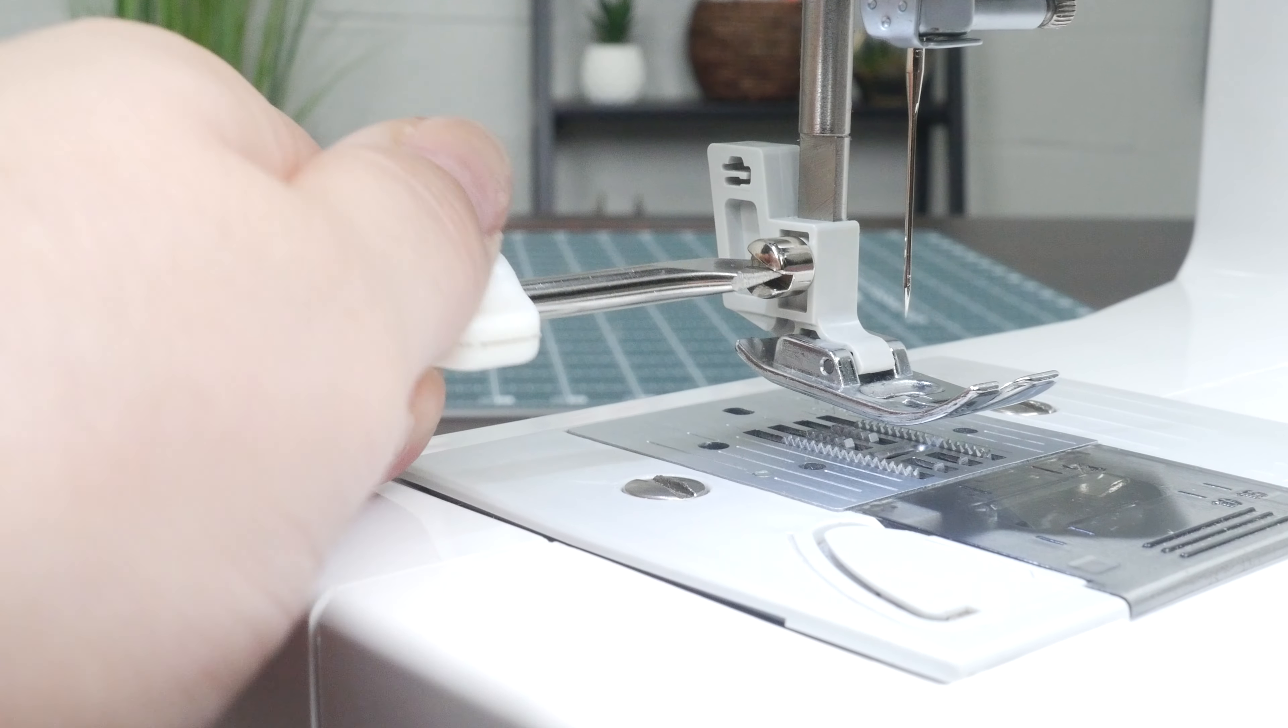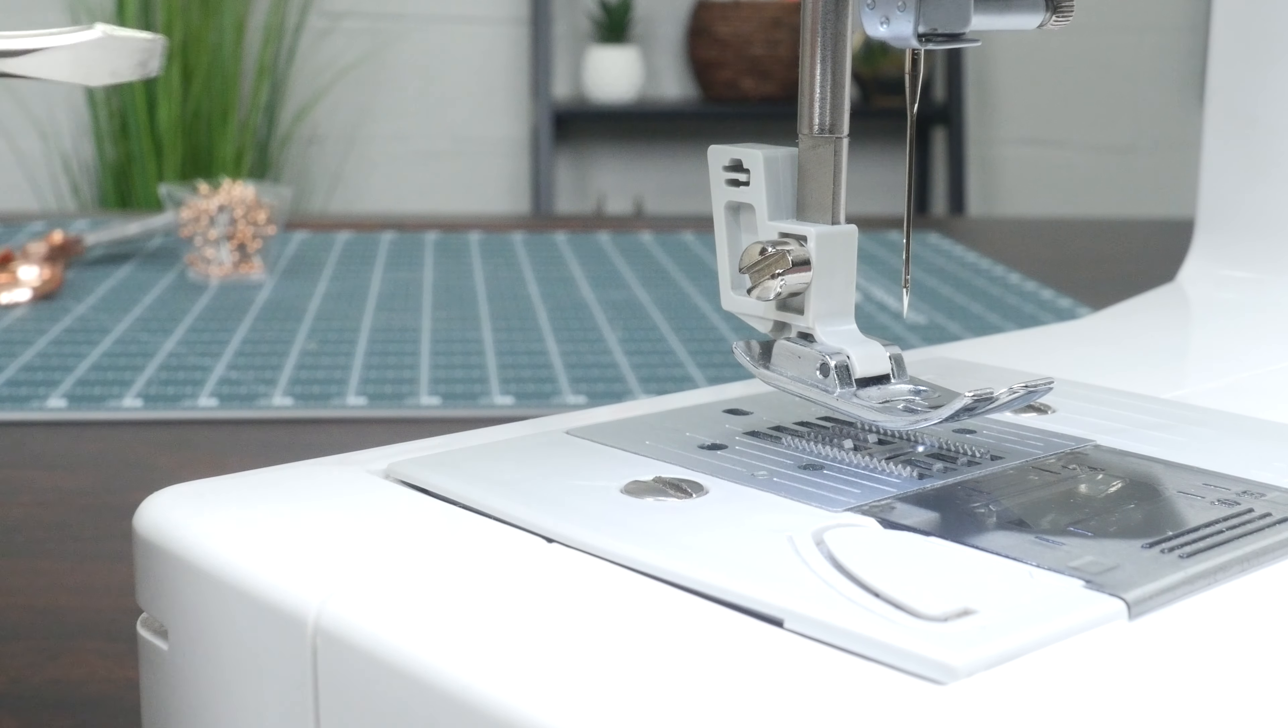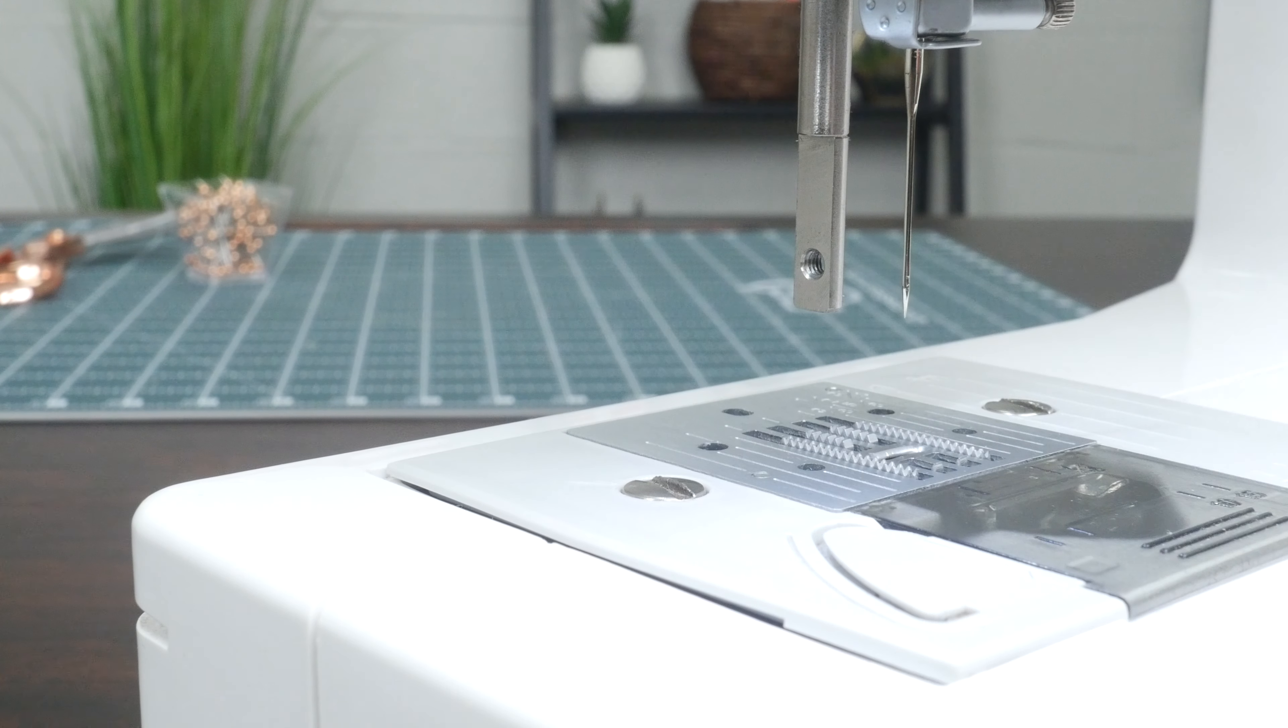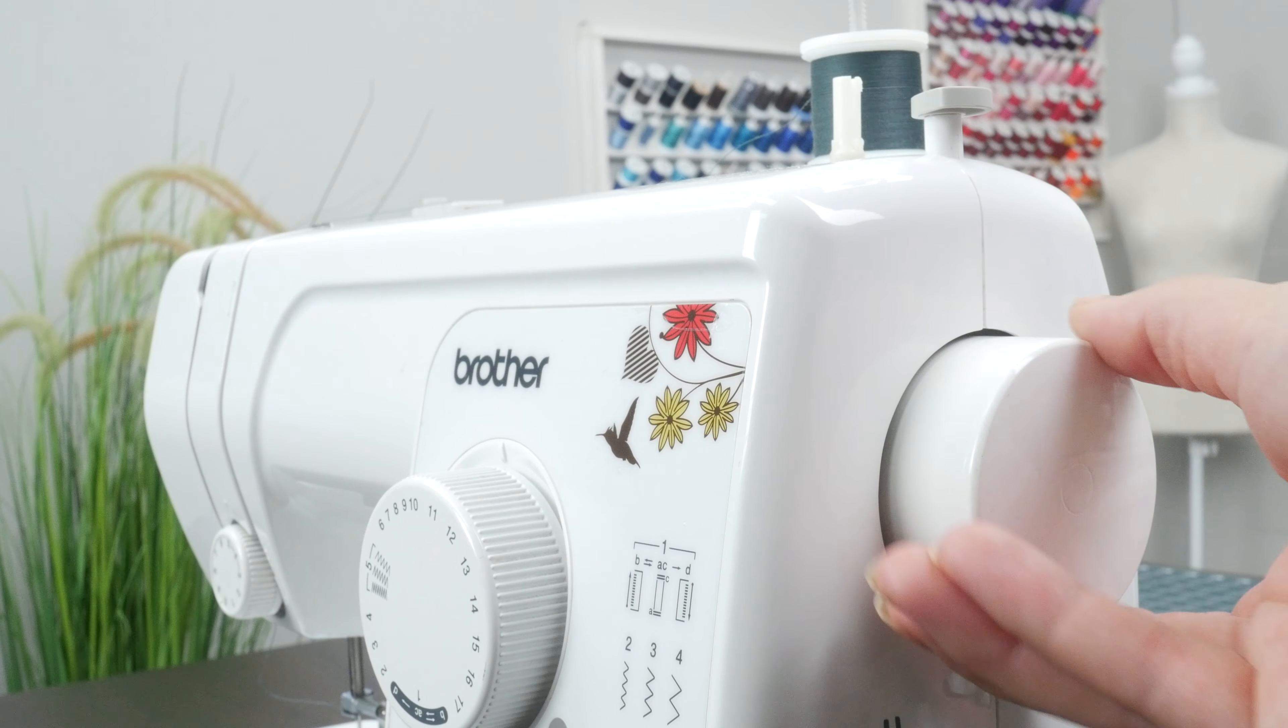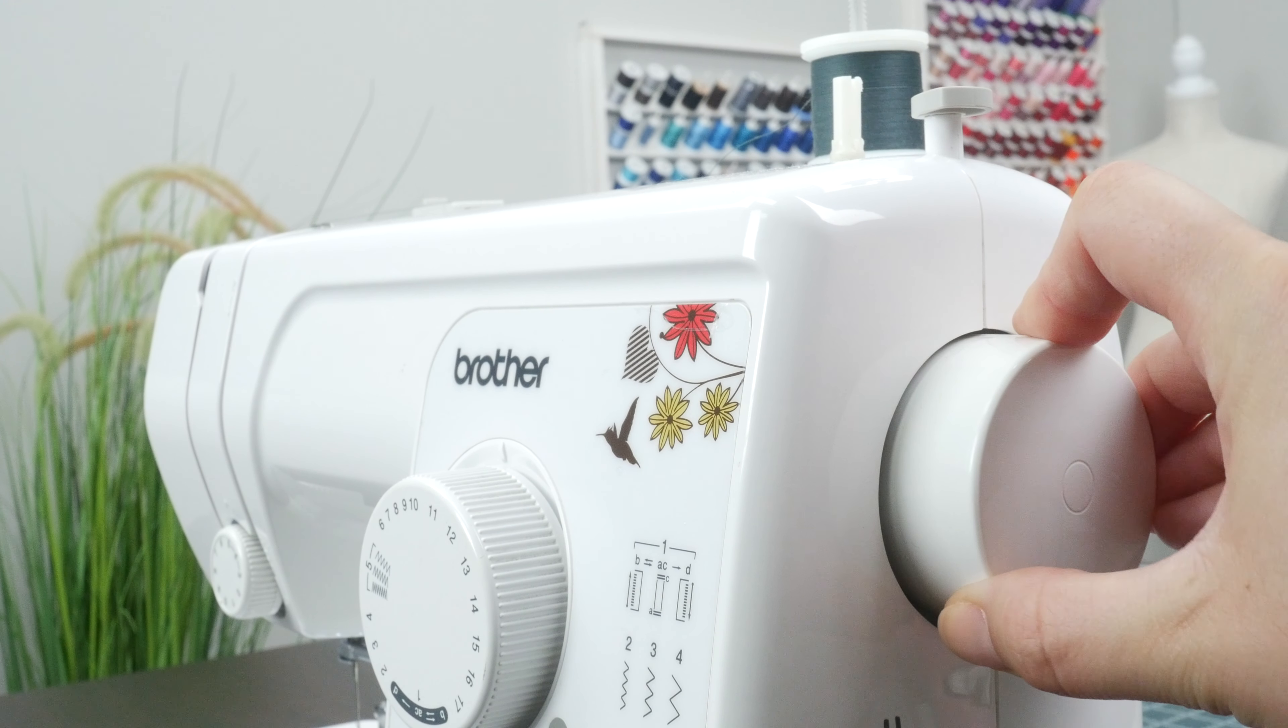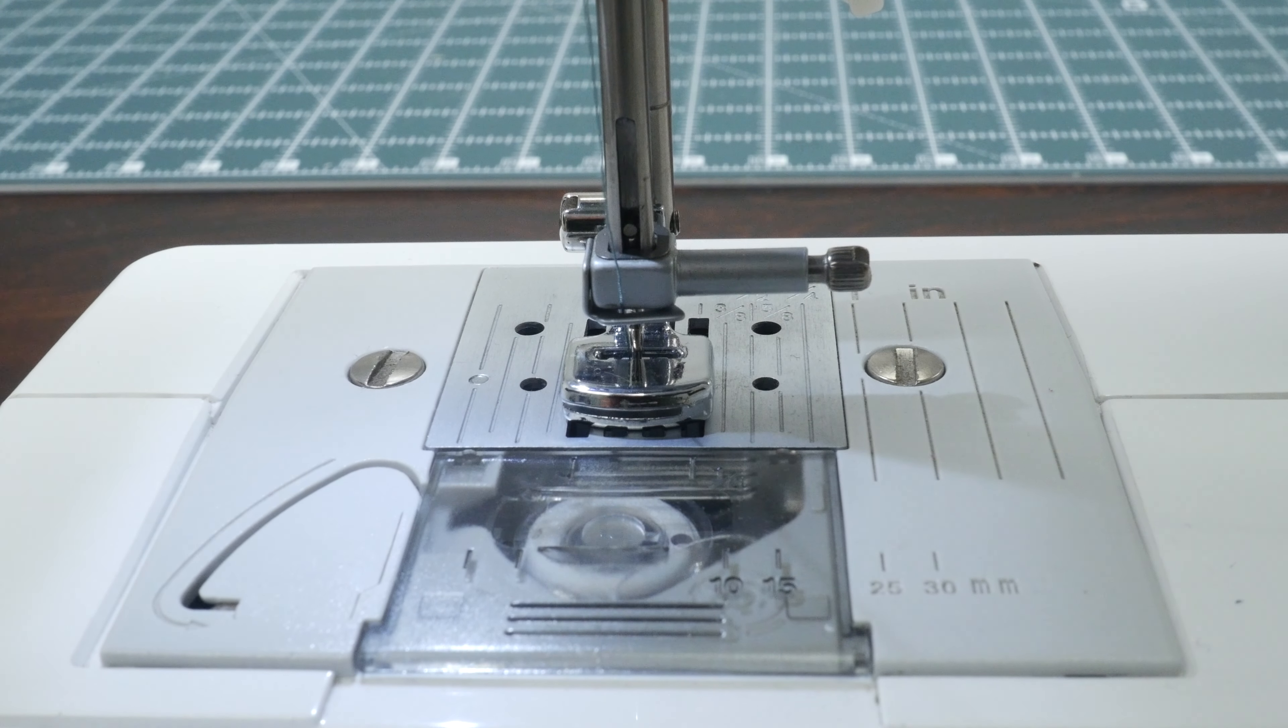For the low shank screw-on option, that will likely be a familiar process, but you would just unscrew the shank, remove, and screw on the presser foot. Now that the foot's installed, slowly rotate the hand wheel counterclockwise towards you. Just double checking that the needle will not hit the foot.